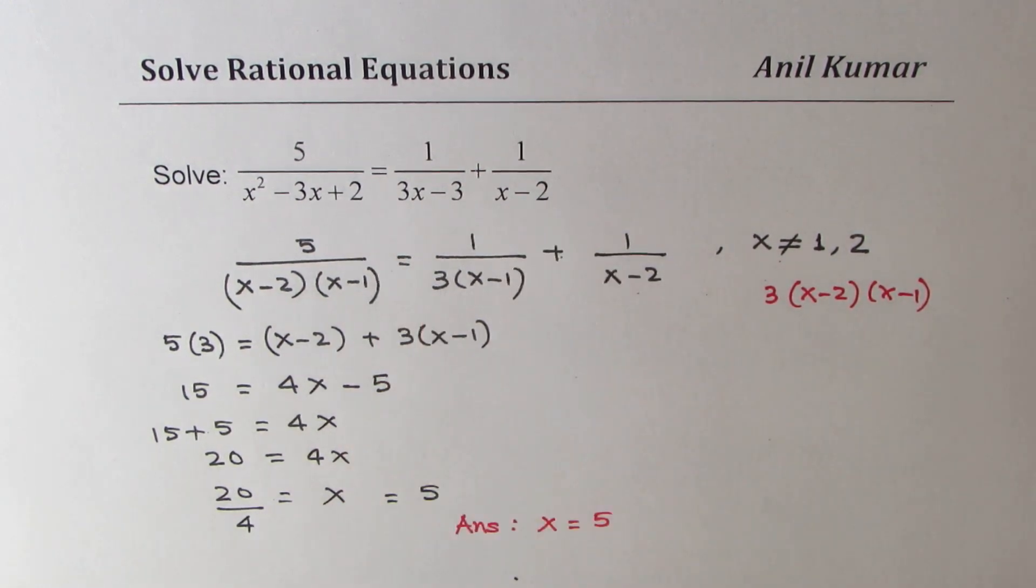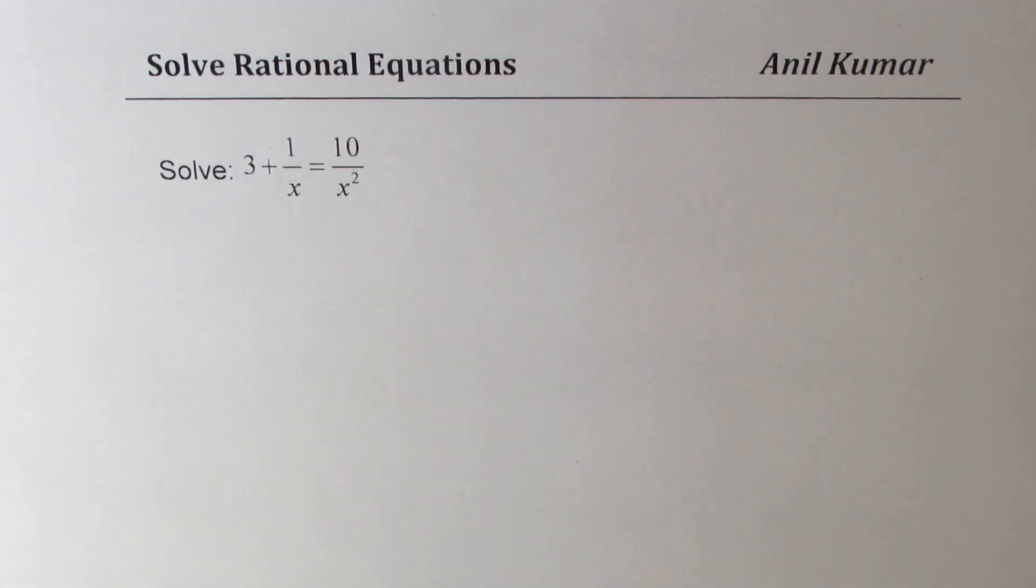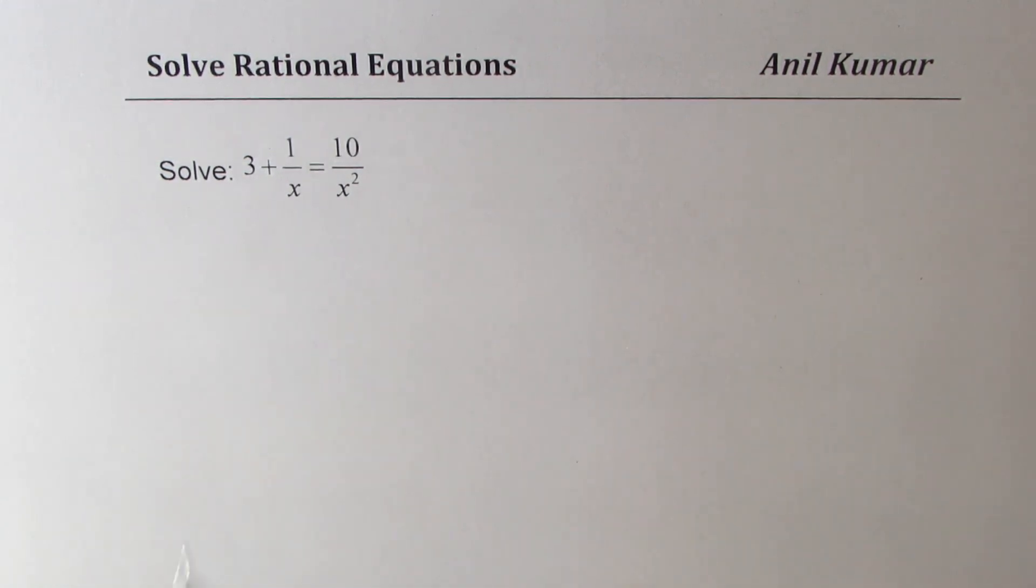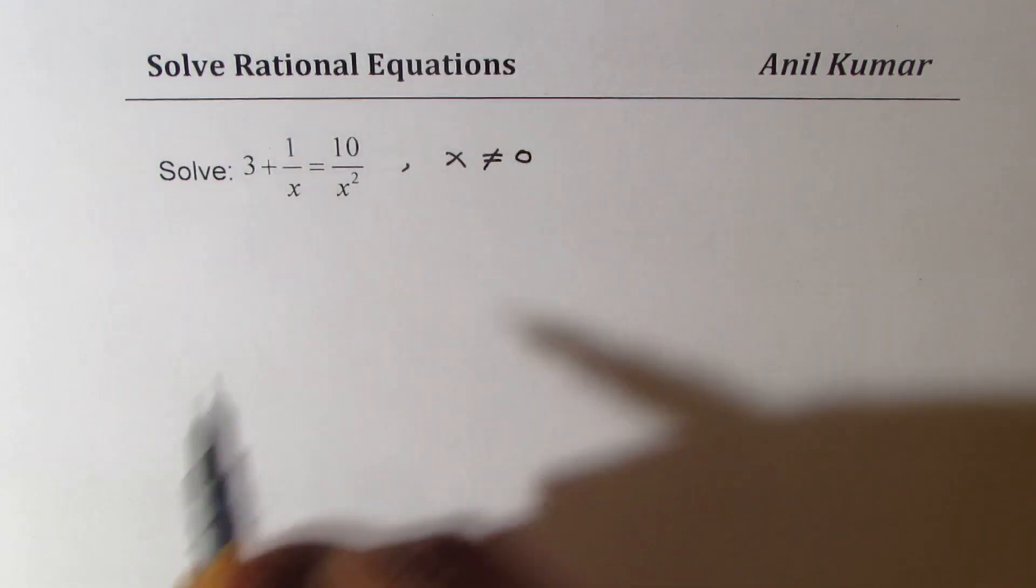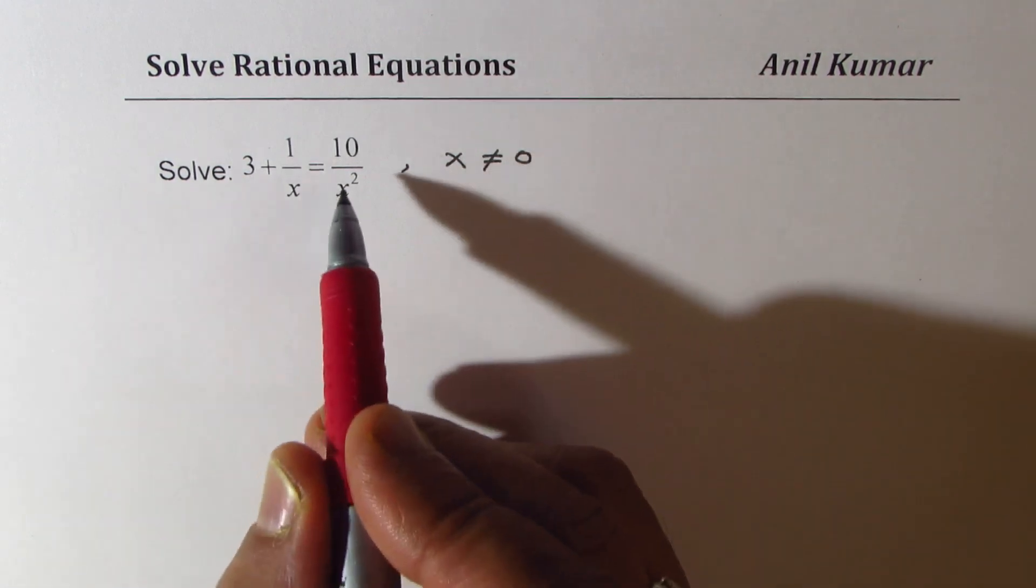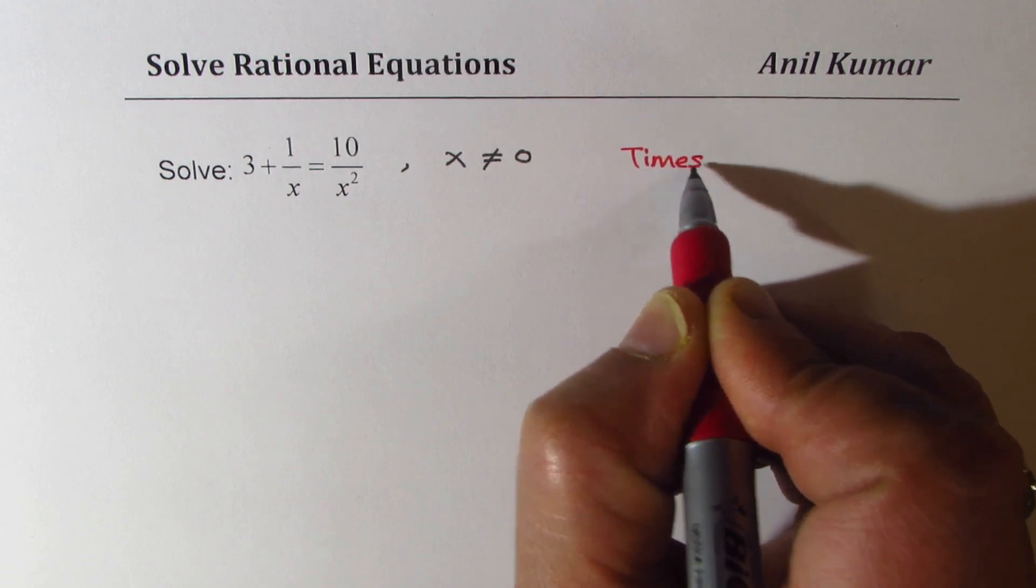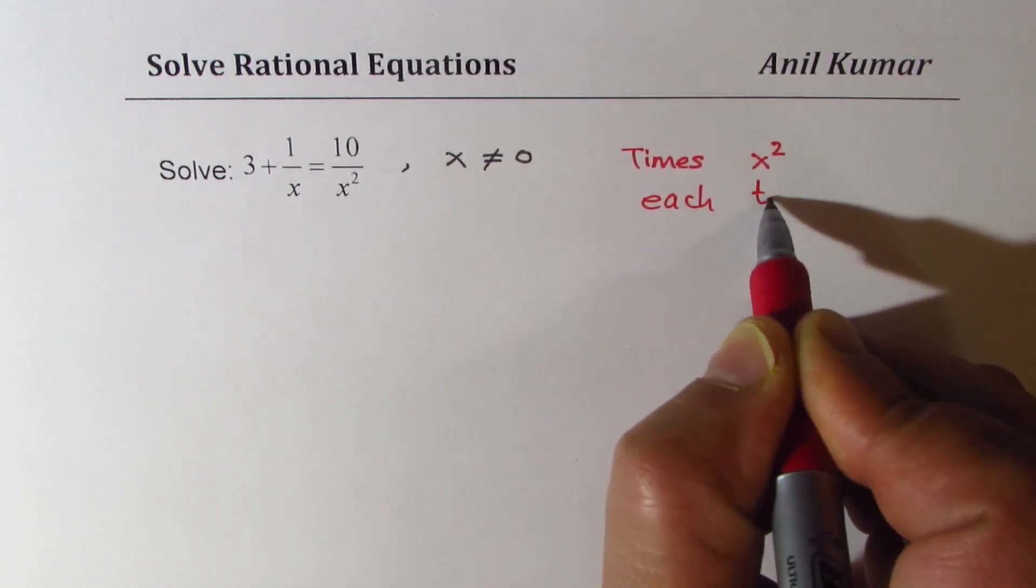You would actually substitute and check your answer. Now, here is the fourth question of this list. We have 3 plus 1 over x equals to 10 over x squared. The restriction is that x is not equal to 0. Now, in this particular case, let us multiply everything by x squared, times x squared each term.